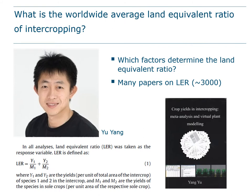This is our first student in our group, Yu Yang, who did work on meta-analysis on intercropping, and I'll present several of his studies because they illustrate very well how meta-analysis works. The question Yu Yang asked was: what is the worldwide average land equivalent ratio of intercropping? That seems a strange question to ask.